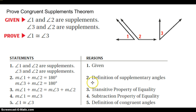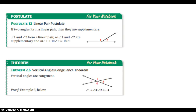Now that we've proven this can work, anytime I come up with the fact that 1 and 2 are supplements and 3 and 2 are supplements, I'm going to know that angle 1 has to equal angle 3. We have a postulate in our notebook called the linear pair postulate — you already know this. If angles are a linear pair, they are supplementary. What we're going to prove is the vertical angles theorem, and once we prove that, we'll be able to say that vertical angles are congruent in any other proof.